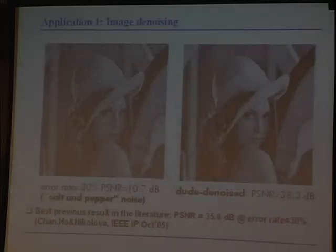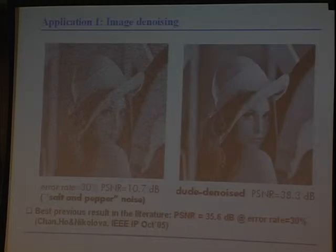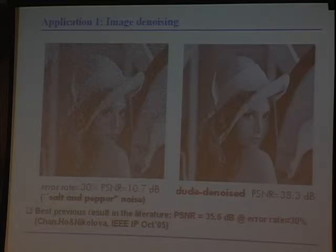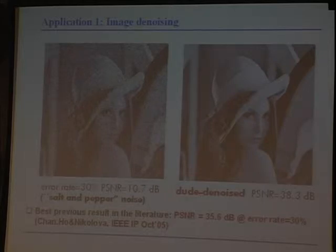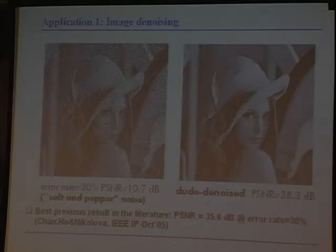Here is an application to salt and pepper noise — noise that randomly corrupts pixels with either black or white. In this case 30% of pixels are corrupted. The denoised version is about three dBs better than the best one previously in the literature. We have the state-of-the-art results there. And let me show a demo: starting with 70% salt and pepper noise — only 30% of pixels are available — and running about 100 iterations of the algorithm, the PSNR improves and we end up at 31 dB. It's amazing that you can get there from only 30% of the pixels.